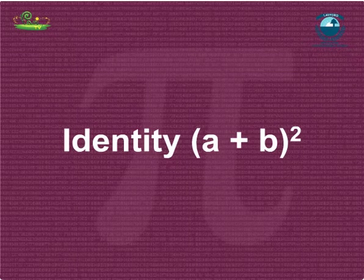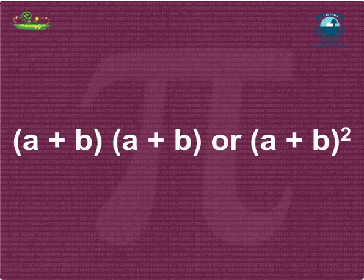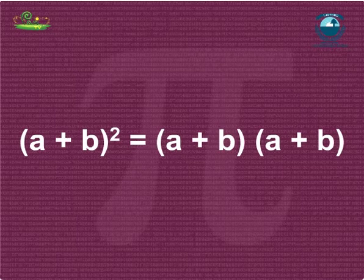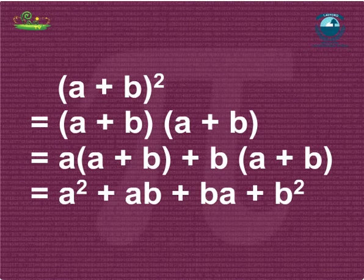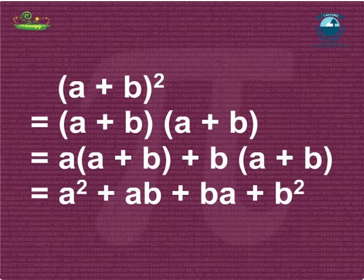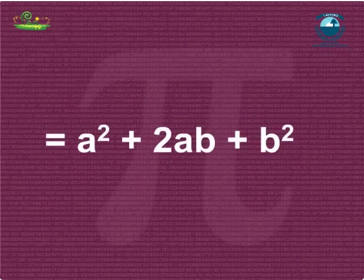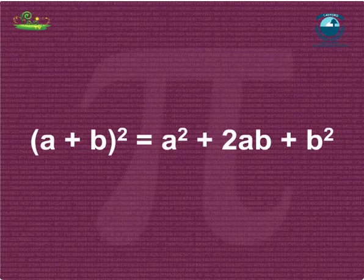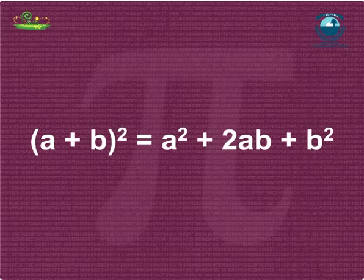Let us first consider the product (a+b)(a+b), or (a+b)². We can write it as (a+b)² = (a+b)(a+b). We can solve this step by step following the distributive law of multiplication, observing that every term in one binomial multiplies with every term in the other. Since ab = ba, we get (a+b)² = a²+2ab+b².